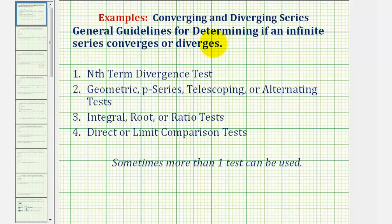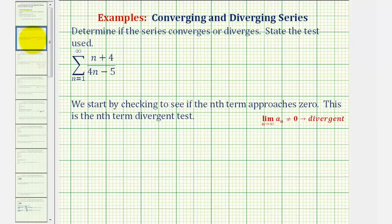Welcome to a series of lessons that will explain how to determine whether an infinite series converges or diverges. In this video, we'll be looking at the nth term divergent test. So let's take a look at our first example. We want to determine if the series converges or diverges and then state the test used. We'll start by checking to see if the nth term approaches zero. If it doesn't approach zero, then the series diverges or is divergent. And this is the nth term divergent test.